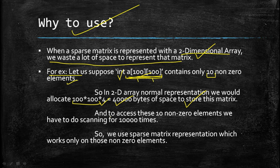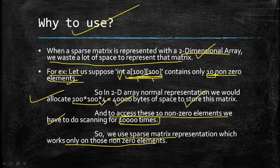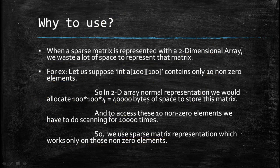There are two problems: storage and time. To access just 10 non-zero elements, we have to scan all 10,000 elements in the matrix, which wastes a lot of time. That is why we use a sparse matrix representation — it works only on those non-zero elements, so it will not be wasting any time or storage.